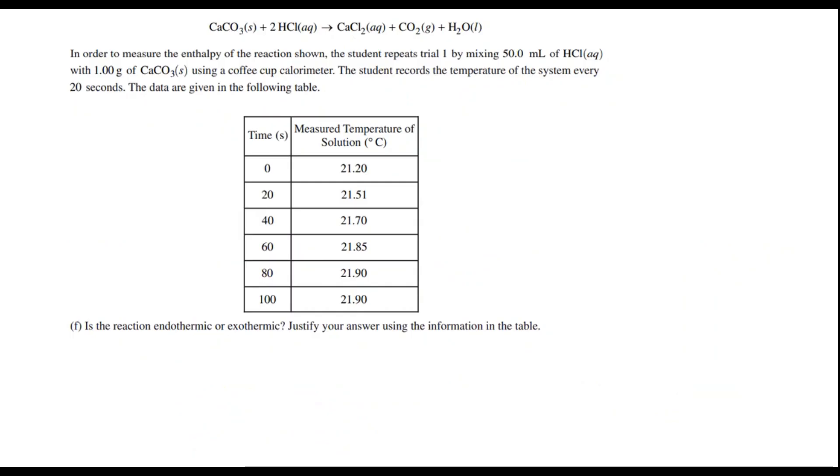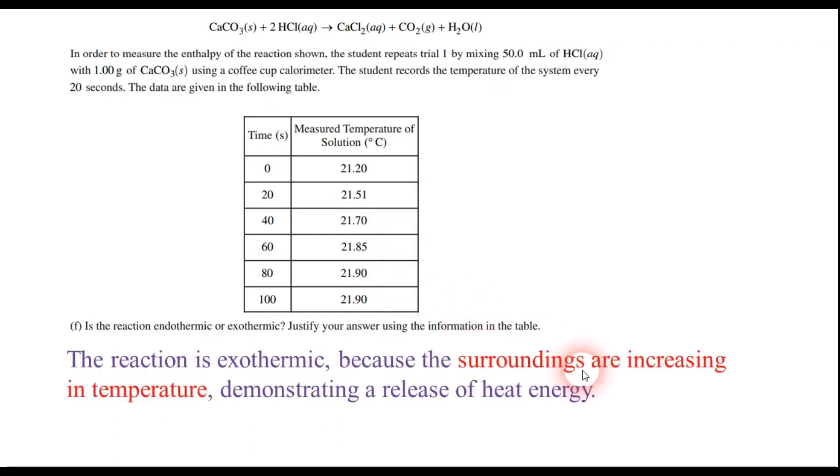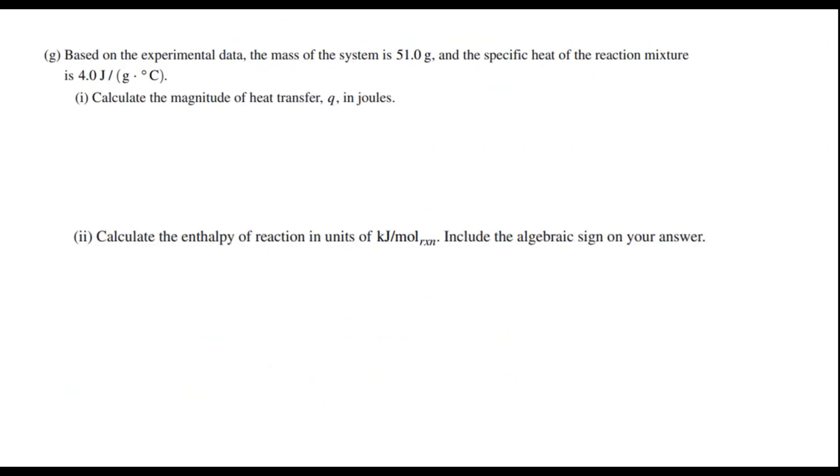Now in the next part of this, we have a thermochemistry question, thermodynamics. And the question in part F is, is the reaction endothermic or exothermic? And justify using the information. So you notice that we have the solution, and we have a thermometer in there. And we're measuring, and the temperature is slowly going up. And so remember, that signifies that it's exothermic. Because when we are measuring the temperature, we're measuring the temperature of the surroundings. So since the surroundings are increasing in temperature, that shows that the system is releasing heat energy. So it is exothermic. So give yourself one point if you got that one right.